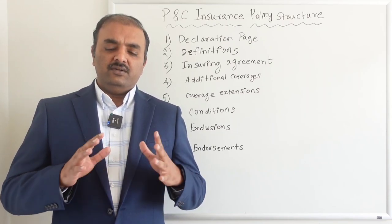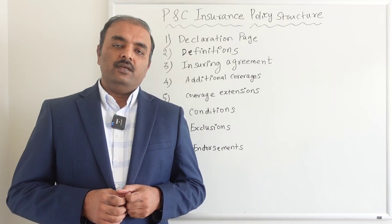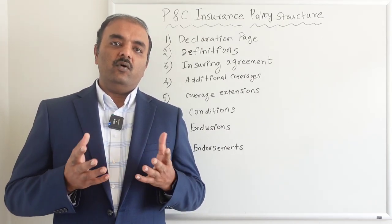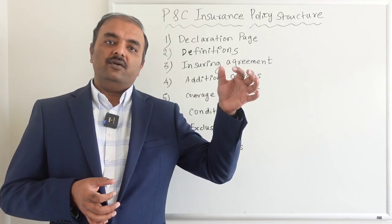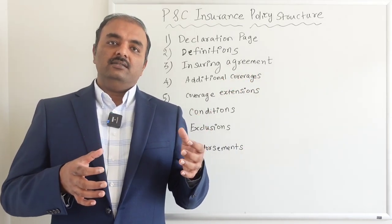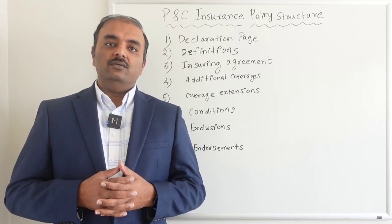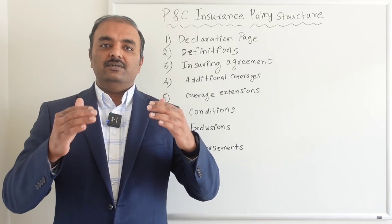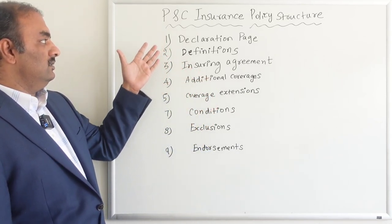First and foremost, what do you mean by policy structure? Every time you get an insurance policy — whether it's homeowners or personal auto — you'll be given a form, which is a contract that you can use whenever there is a claim. The contract has a list of documents in the following sequence.